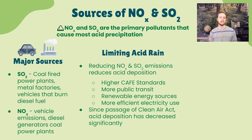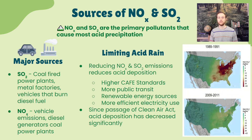The Clean Air Act is a real success story when it comes to government intervention in the environment. Looking at this map of the United States, sulfate ions are indicators of acid rain. Comparing the late 1980s and early 1990s to the end of the first decade of the 2000s, we can see a dramatic decrease in acid deposition, especially in the eastern United States.